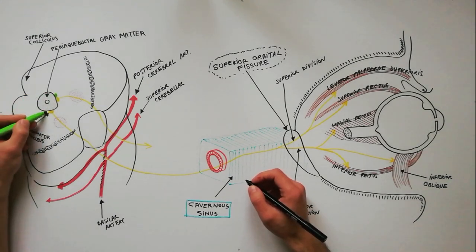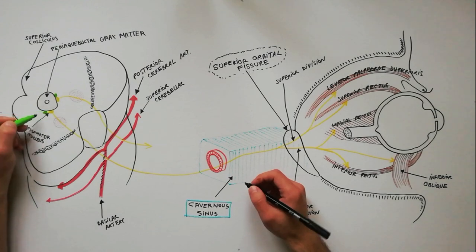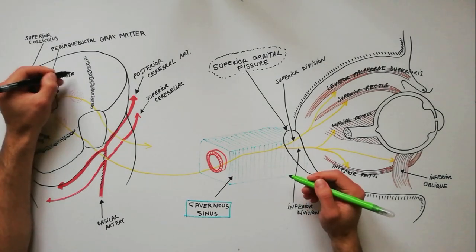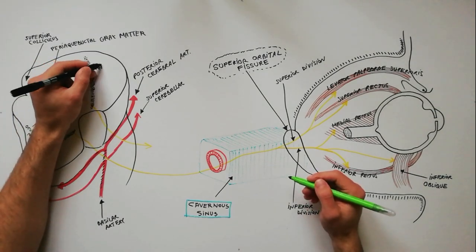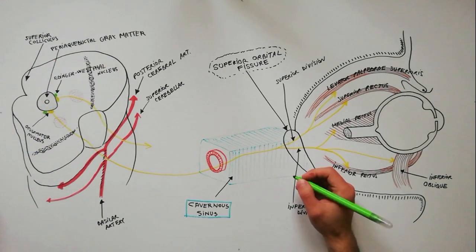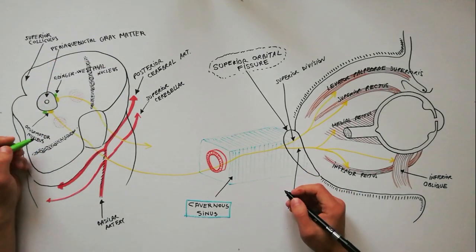The preganglionic parasympathetic fibers originate in the Edinger-Westphal nucleus, located in the midbrain at the level of the superior colliculus, just posterior to the oculomotor nucleus.